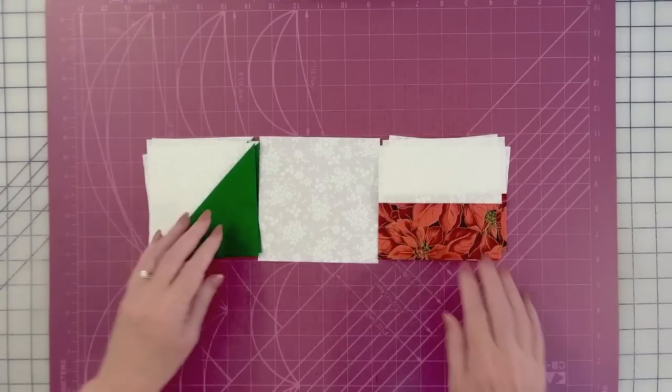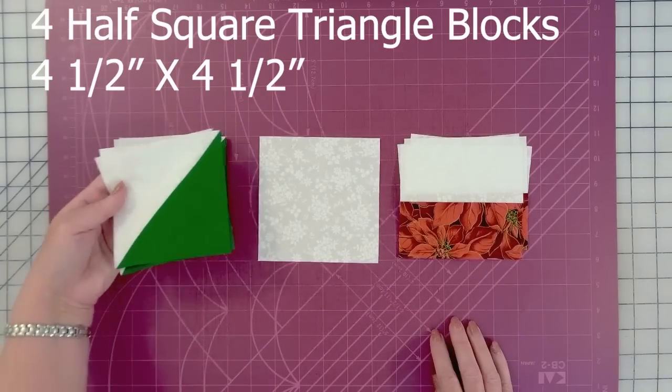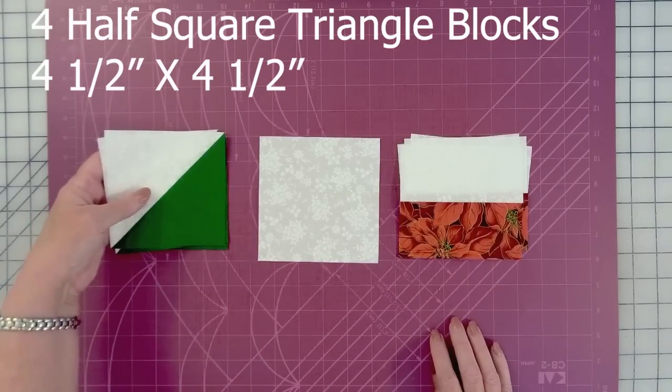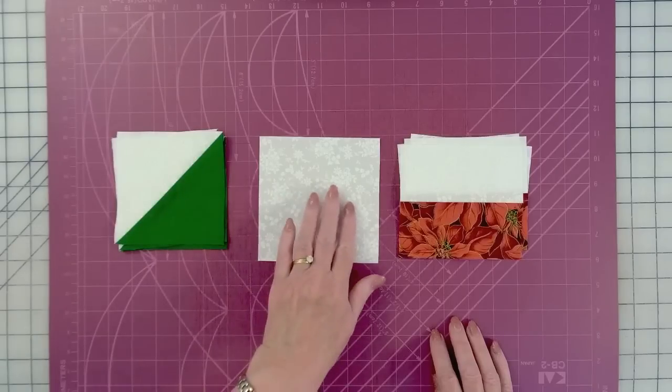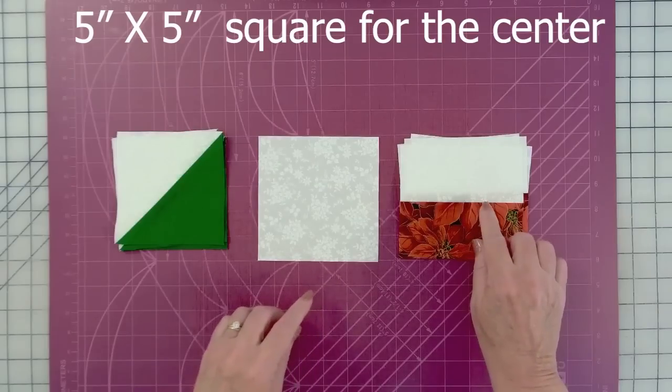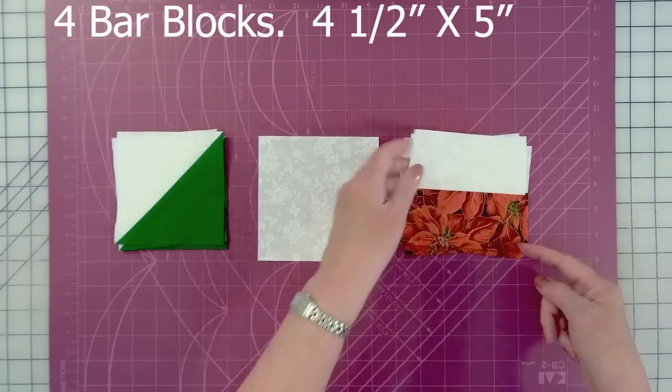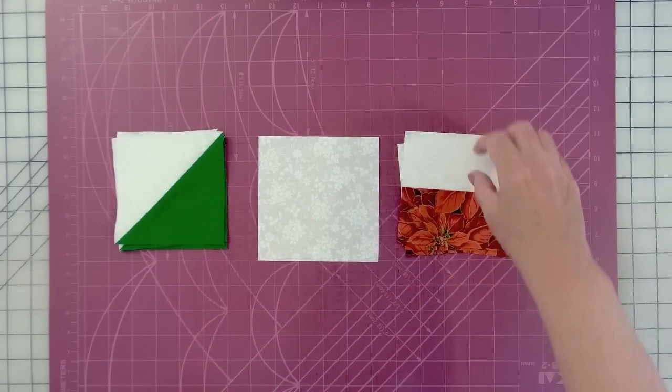So, it starts off, we're going to need the same sorts of pieces. We're going to need four of these four and a half inch half square triangles. We're going to need one five inch square of white for the center, and we're going to need four of these bar blocks. And again, they measure four and a half by five. They are rectangles.